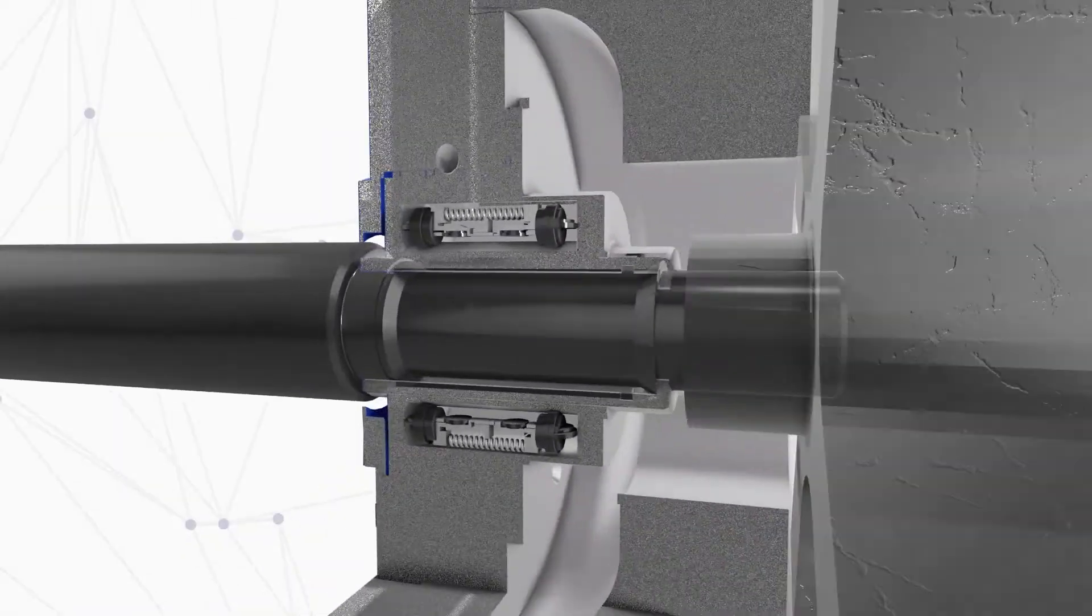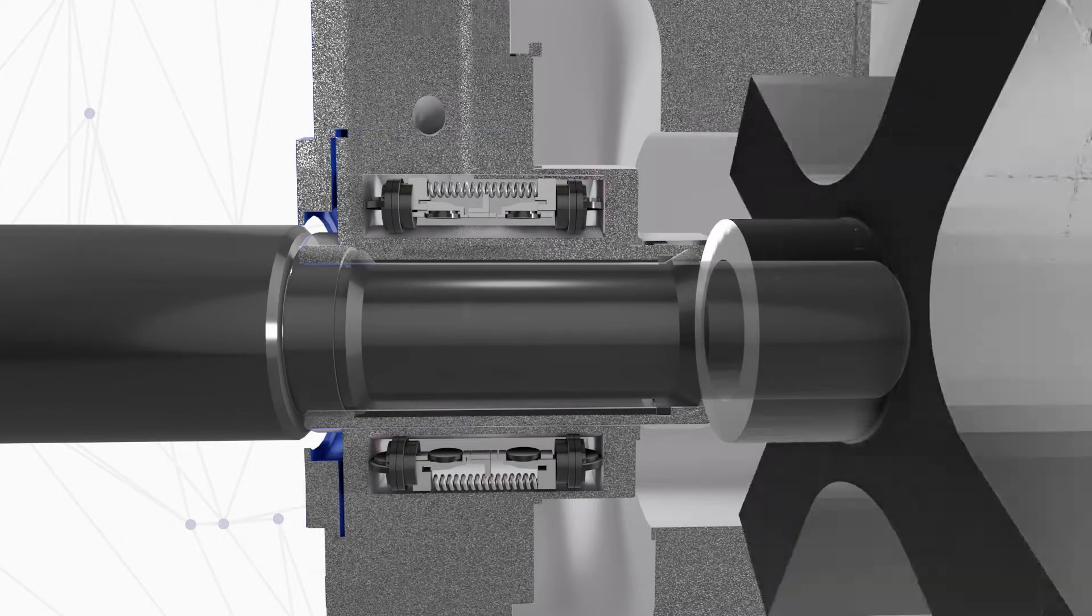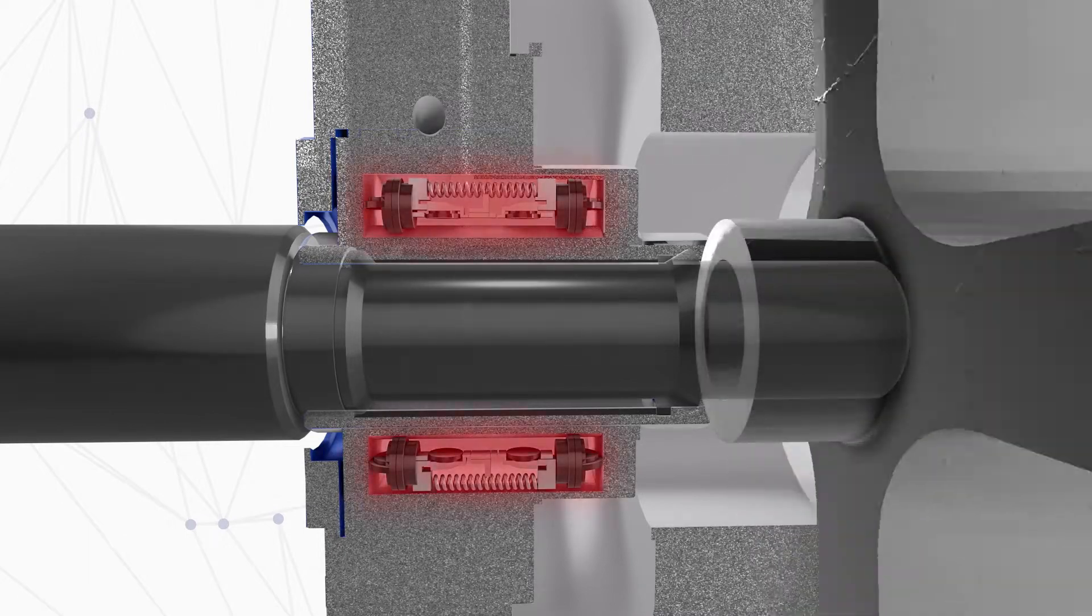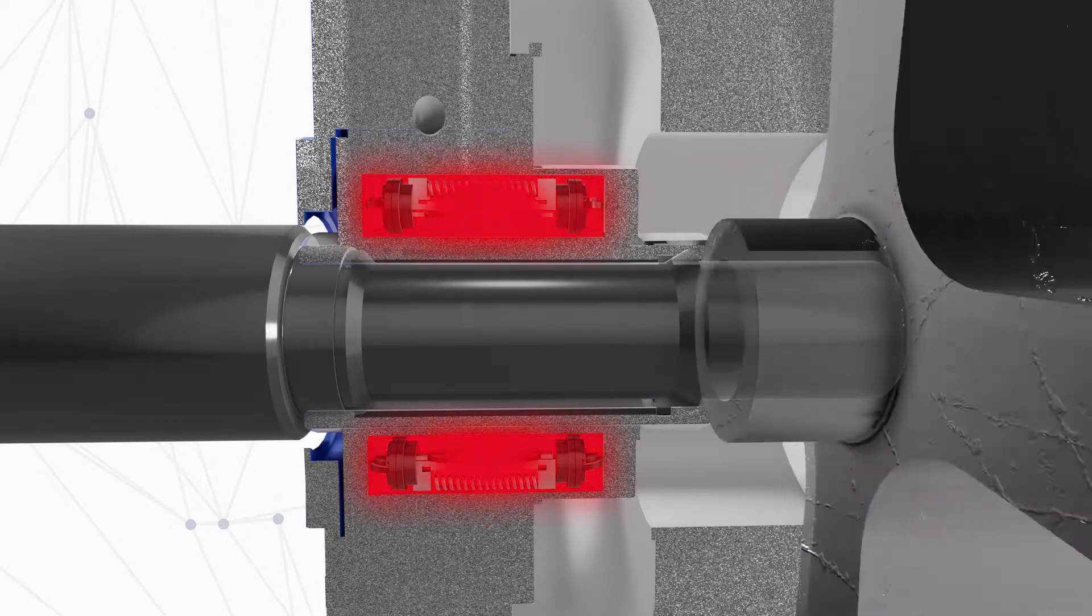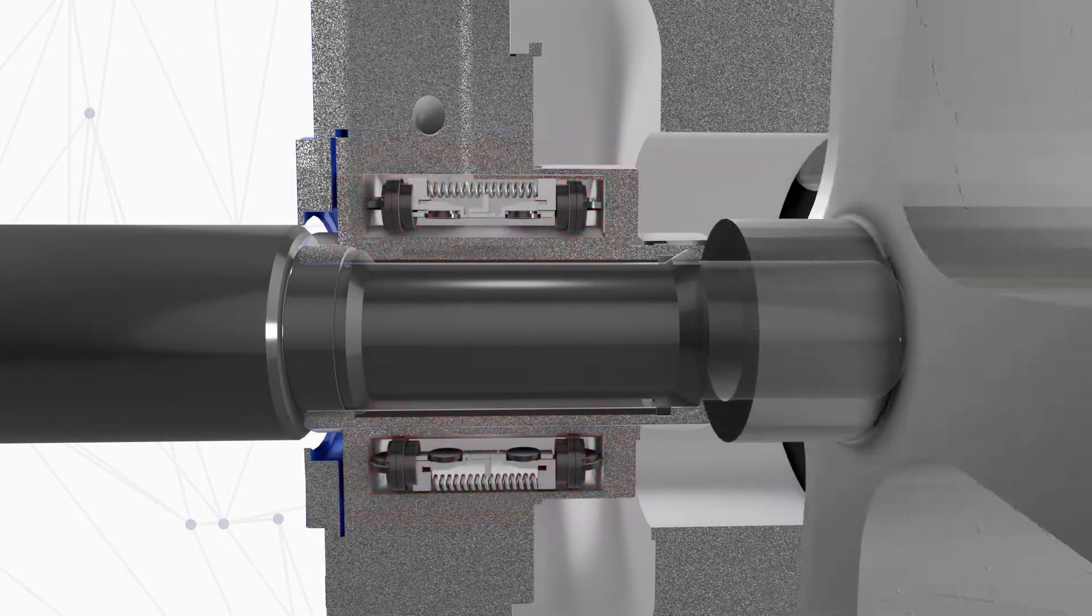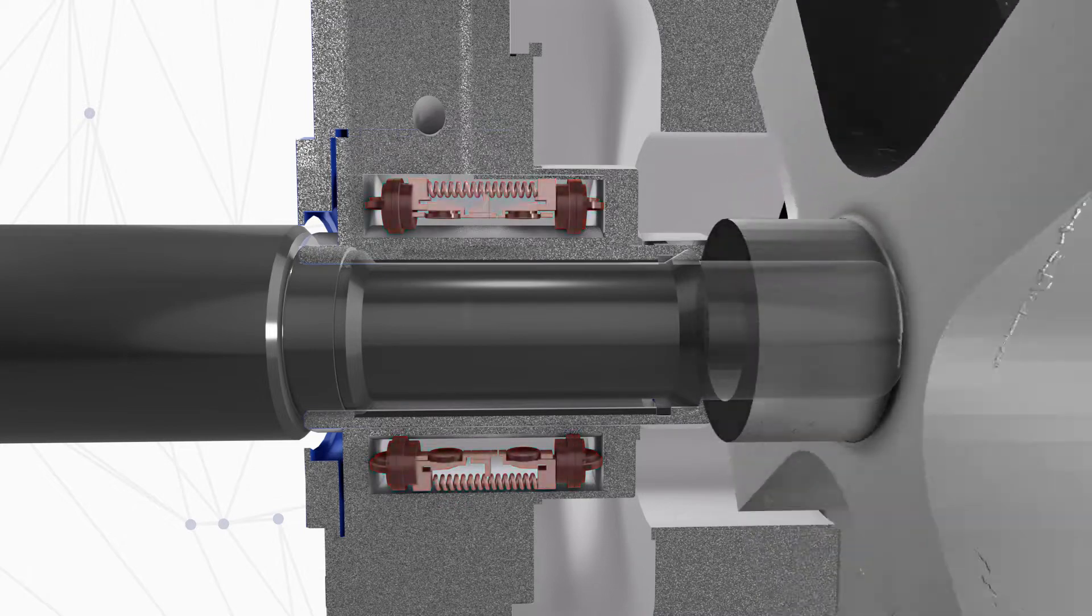When a pump runs dry without fluid circulating through the wetted path, a greater amount of heat is generated at the mechanical seals. Subjecting the mechanical seals to a greater amount of heat than what they can withstand causes premature failure of the seals.